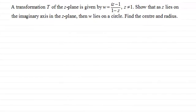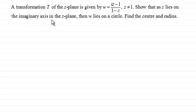Hi there. In this example on transformations of the complex plane, we've got a transformation t of the z-plane which is given by w equals iz minus 1, all divided by 1 minus z, where z doesn't equal 1. What we've got to do is show that if z lies on the imaginary axis in the z-plane, then w lies on a circle, and we've got to find the centre and radius.